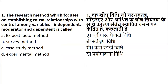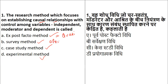Starting with the first question: the research method which focuses on establishing a causal relationship with controlled variables — that is dependent, moderator, and independent — is called what? So we have a causal relationship among the variables. Is it ex-post facto, survey method, case study method, or experimental method? We have done all these methods in our live class very well. Ex-post facto, also called 'causal,' talks about something which has already happened — after the fact.